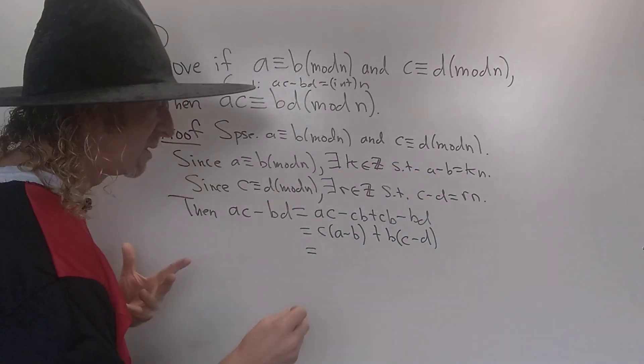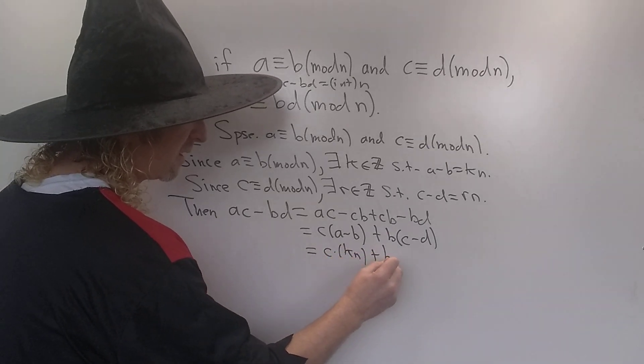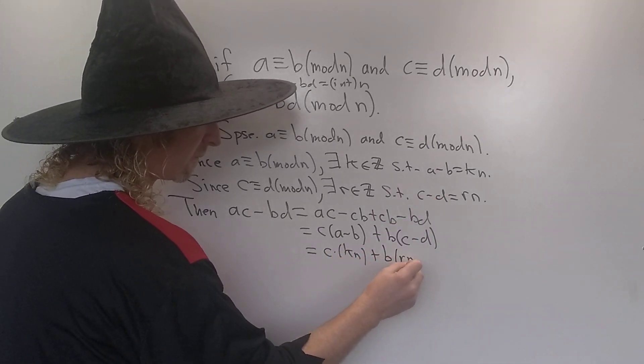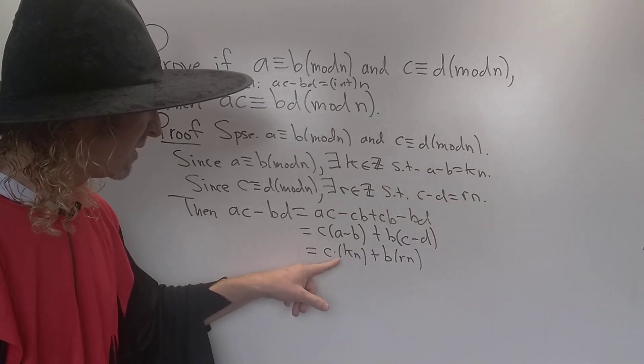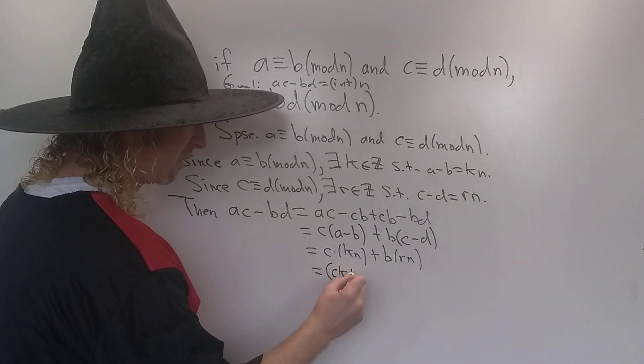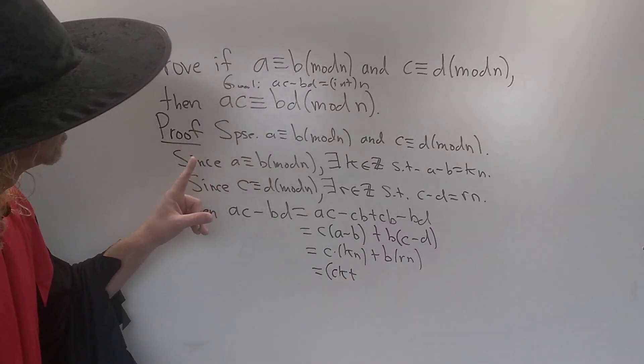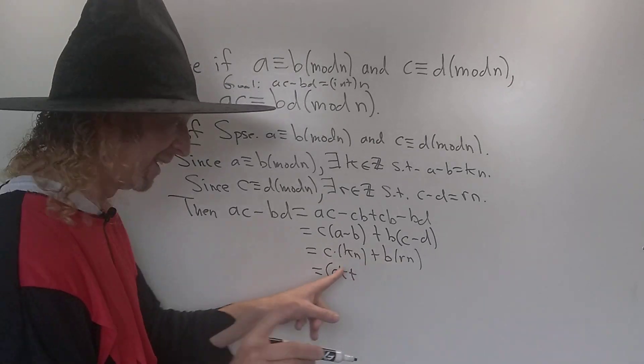So A minus B is KN. So this is C times KN, and then plus B. C minus D is RN, okay? And then we have CK and BR. We can pull that out. This is actually CK plus, oh, I have to be careful here. Yeah, I'm trying to show it's a multiple of N. So I'm pulling out everything except the N, right?